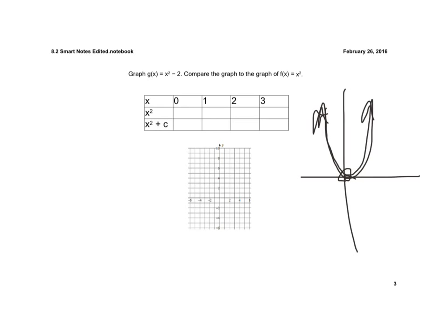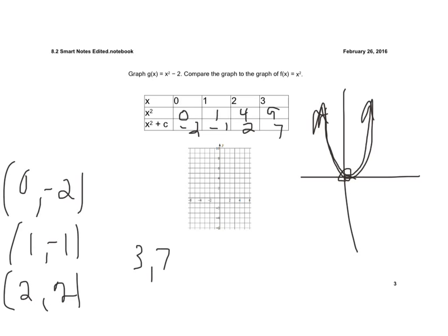In this case, we're going to plug in 0 for x, so 0 squared is 0, and then 0 minus 2 would be a negative 2. Then 1 squared is 1, and 1 minus 2 would be a negative 1. 2 squared is 4, and then 4 minus 2 is 2. And 3 squared is 9, and 9 minus 2 is 7. So now my ordered pairs are 0 comma negative 2, 1 comma negative 1, 2 comma 2, and 3 comma 7.